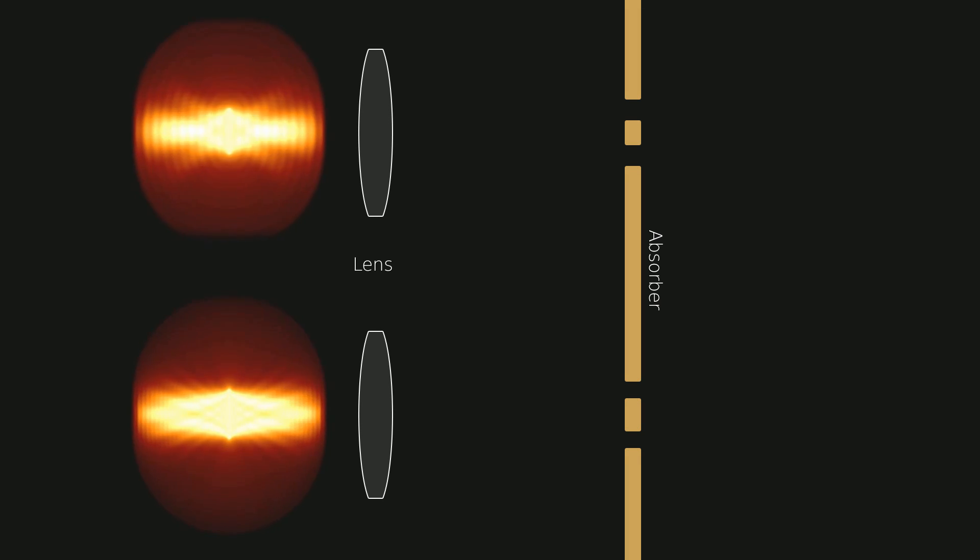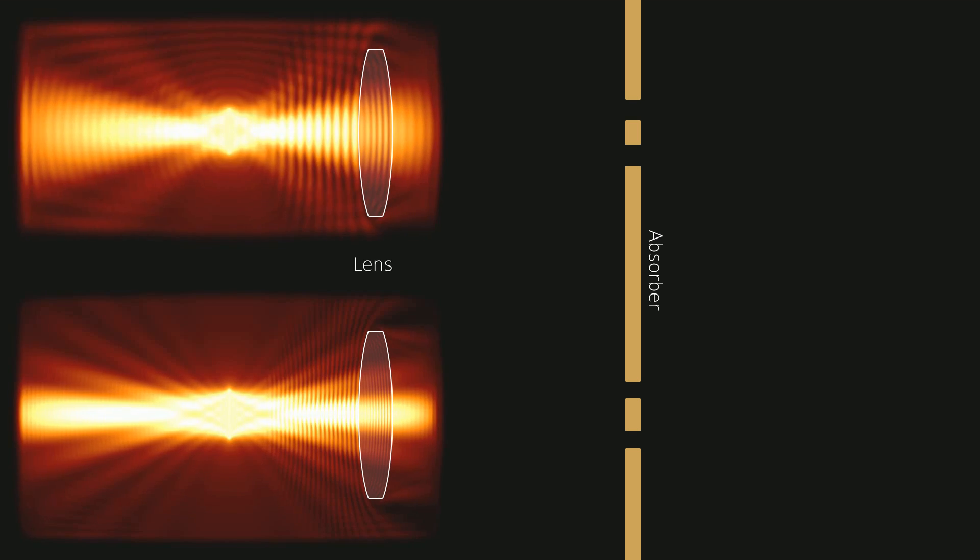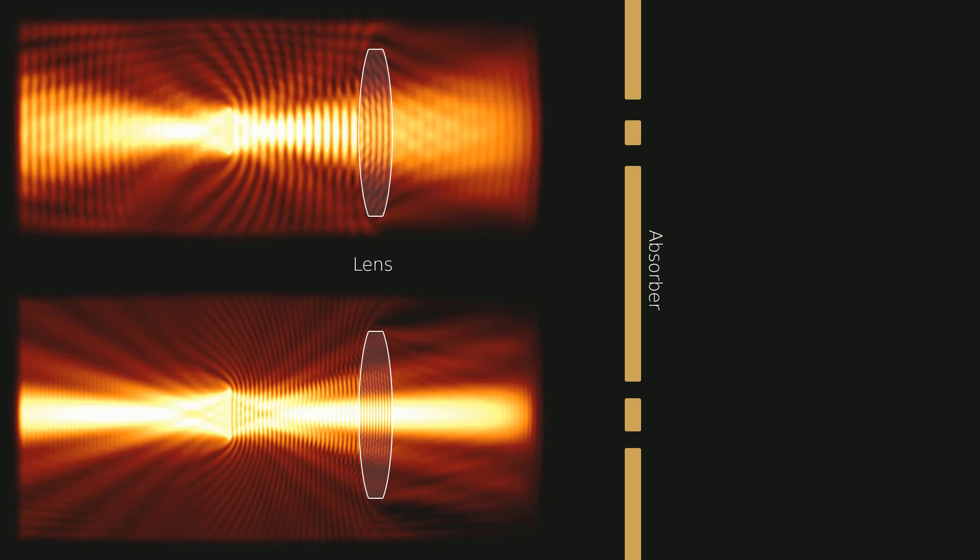By averaging the squared field amplitude, an intensity value can be computed for each grid point. Such a visualization is often more readable and conveys the light distribution more clearly.